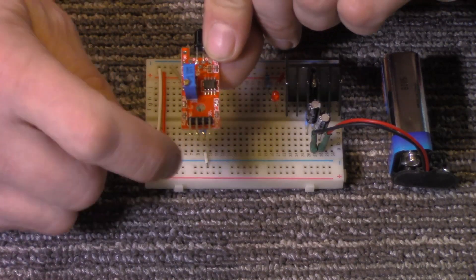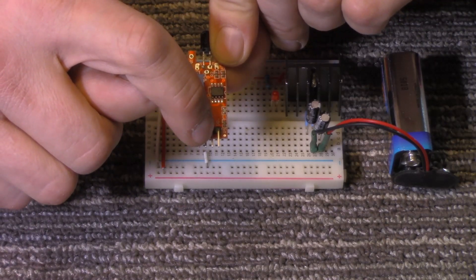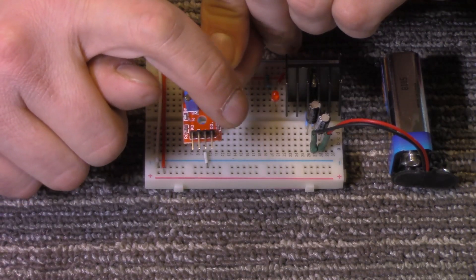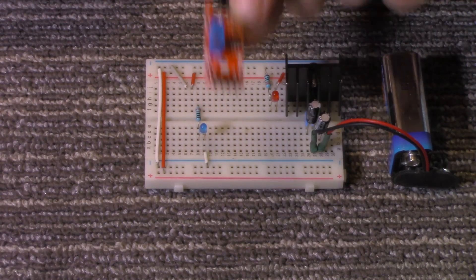But next, what we have is we have our ground, then we have our positive, our 5-volt in, and then we have our digital out pin, and that's what we are going to be dealing with is digital reading this.